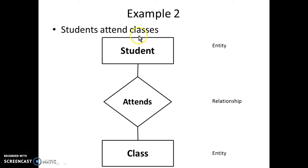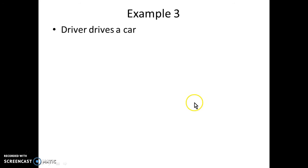And to represent the multiple number of entities, we associate it with cardinality. We use cardinality to represent how many entities of one side is associated with how many entities of other side. So, let us take another example. Driver drives a car.